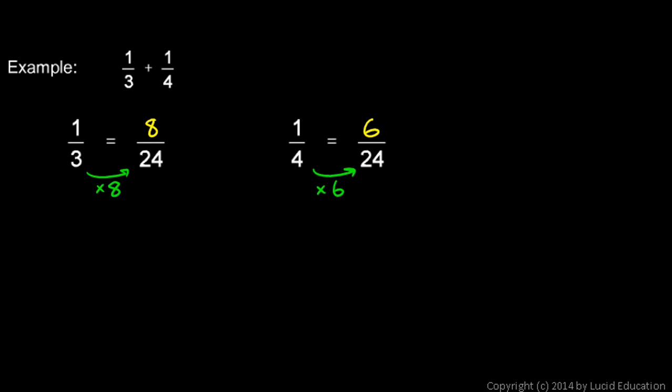Now I can add those. I can add 8 over 24 and 6 over 24, because those are like fractions. They both have a denominator of 24. So I just add the numerators. 8 and 6 is 14. So I get 14 over 24.